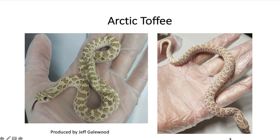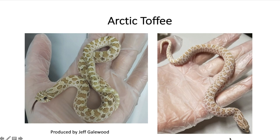Next up we're going to add in the other incomplete dominant gene — the conda — so basically the arctic toffee with a reduced pattern. These are very good examples of it, and the one on the left-hand side actually looks very similar to the toffee super arctic, but Jeff had it labeled as just the toffee arctic conda.